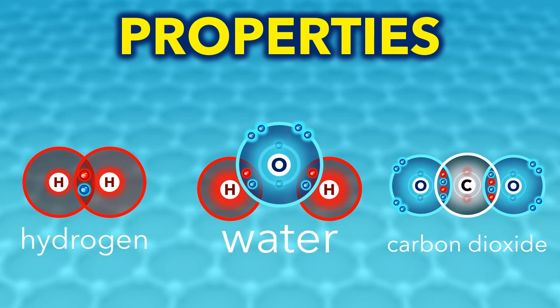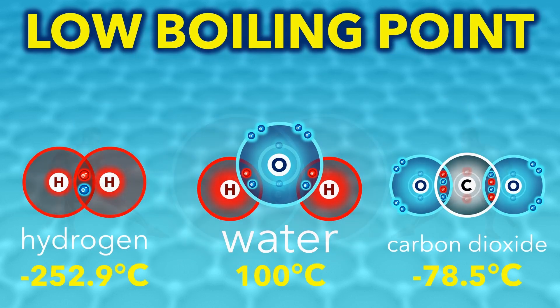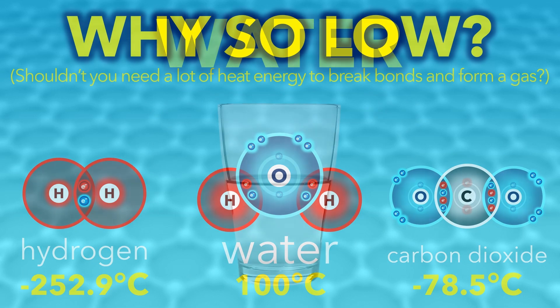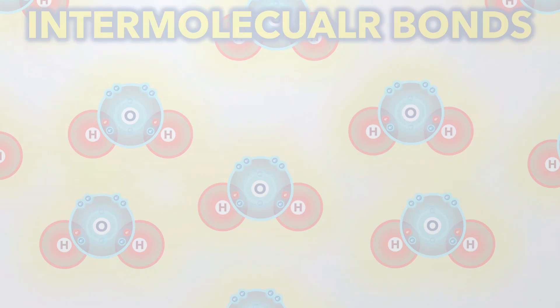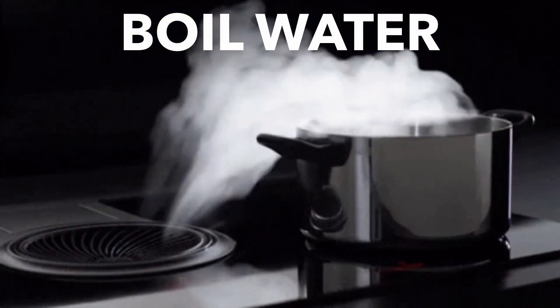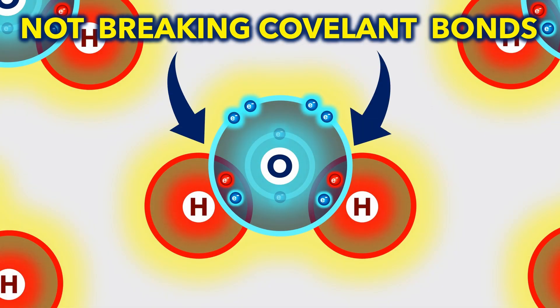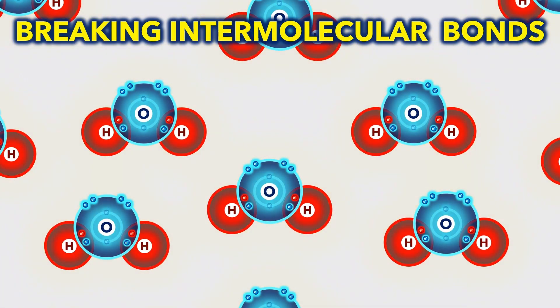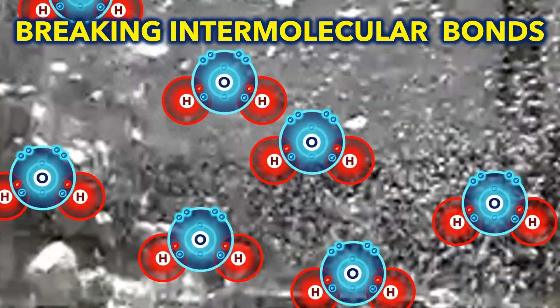All simple covalent compounds have low boiling points. But if covalent bonds are so strong, why is the boiling point so low? Well, take water. There are weak intermolecular bonds between the molecules. So when you're boiling water, you're not breaking the covalent bonds inside the water molecules, but the intermolecular bonds between molecules, which don't take that much energy to break.